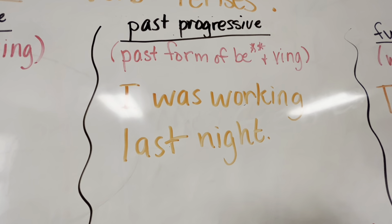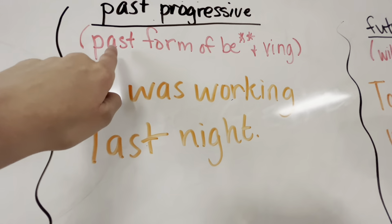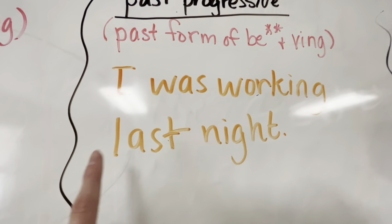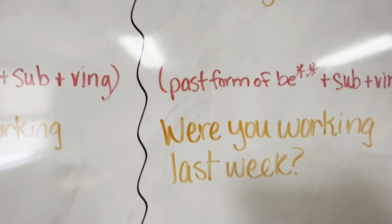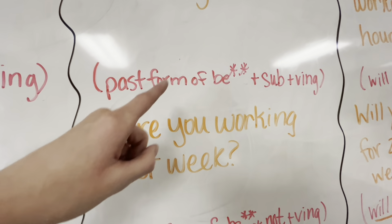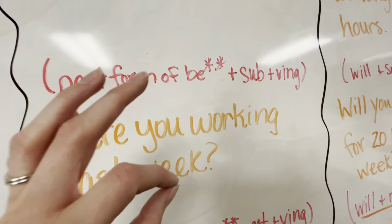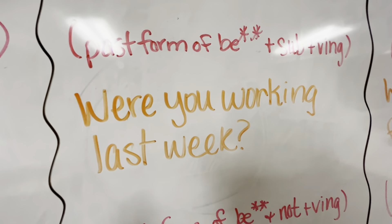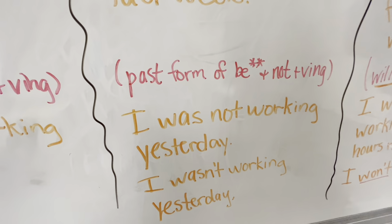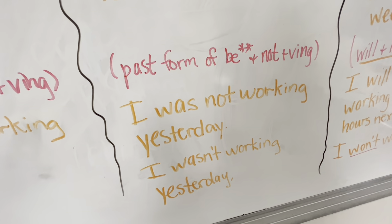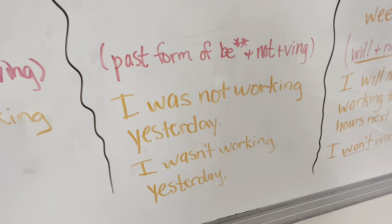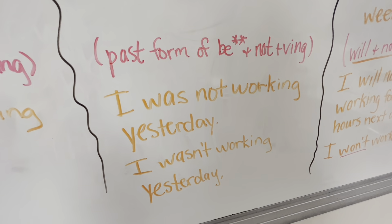Past progressive: to make a past progressive statement, you use the past form of be plus your verb form — I was working last night. To form it as a question: past form of be, plus your subject, plus your verb form — were you working last week? To make it negative: past form of be, plus not, plus your verb form — I was not working yesterday, or I wasn't working yesterday.